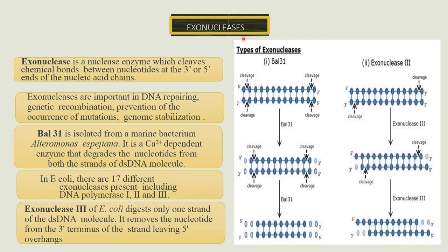Exonucleases are nuclease enzymes which cleave chemical bonds between nucleotides at the 3' or 5' end of the nucleic acid chain. Exonucleases are important in DNA repair, genetic recombination, prevention of mutations, and genome stabilization. Bal 31 is isolated from a marine bacterium, Alteromonas. It is a calcium-dependent enzyme that degrades nucleotides from both ends of the double-stranded DNA molecule.